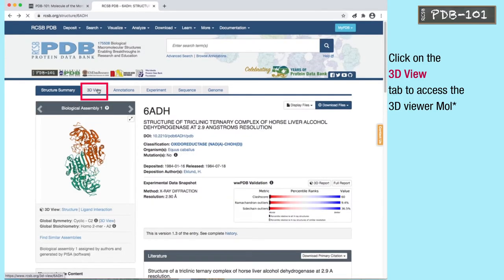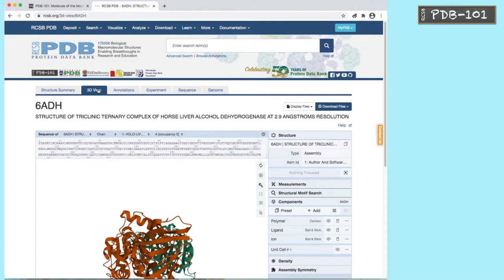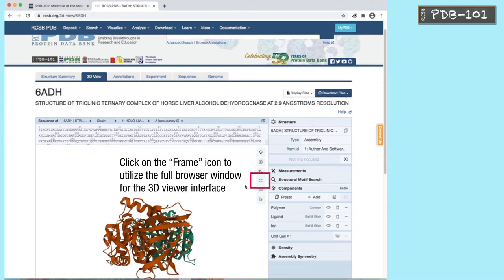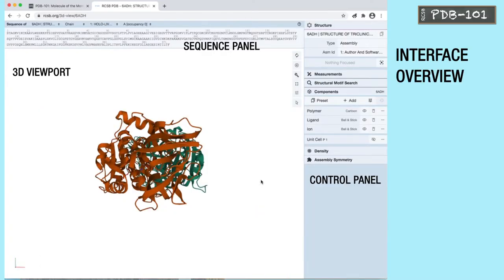Click on the 3D view tab to access the 3D viewer Molstar. Click on the frame icon to utilize the full browsing window for the 3D viewer interface. The interface has three main panels: sequence panel, 3D viewport, and control panel.